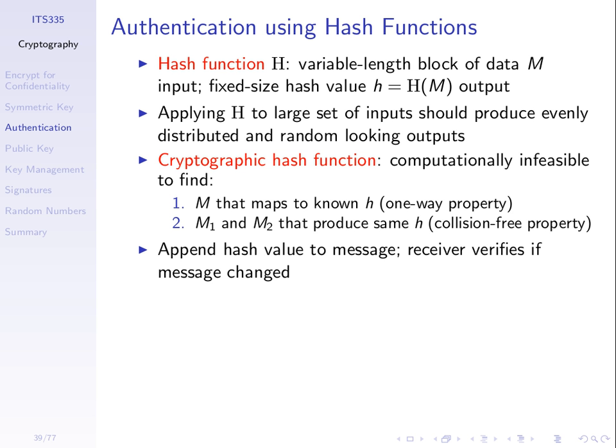Another way to state it: for a cryptographic hash function, it should be hard to find some message that maps to some known hash value. So if I have a hash value as an attacker, it should be hard to find another message that produces that hash value — given a hash value, find a message. If we have that one-way property, we can achieve different security objectives. Another property is collision free — it should be hard to find two different messages M1 and M2 that produce the same hash value. If our hash function has this property, we say it's collision free.